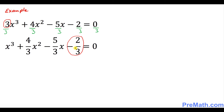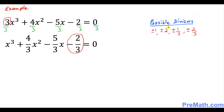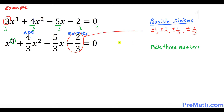We are looking for possible divisors or factors of this number. Our possible divisors turn out to be positive or negative 1, positive or negative 2, positive or negative 1 over 3, and positive or negative 2 over 3. The highest degree of this polynomial is 3, which means we must have at most three solutions. Therefore we must pick three numbers that add up to 4 over 3 and multiply to negative 2 over 3.